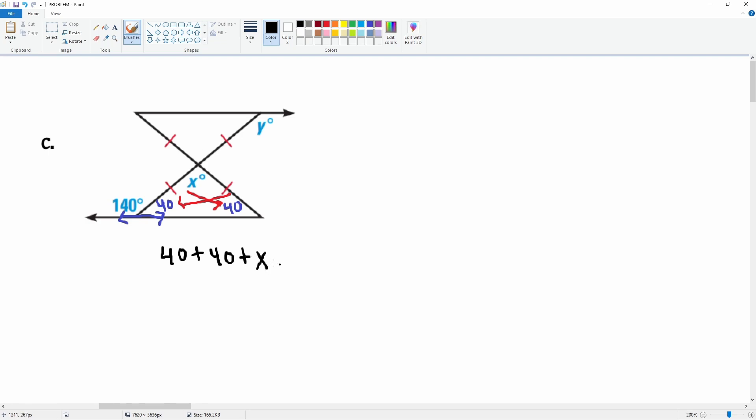This allows us to set up the equation 40 plus 40 plus x is equal to 180. 40 plus 40 is 80, bring down the plus x equals 180. Subtract 80 from both sides, this cancels, leaving you with x is equal to 100 degrees.